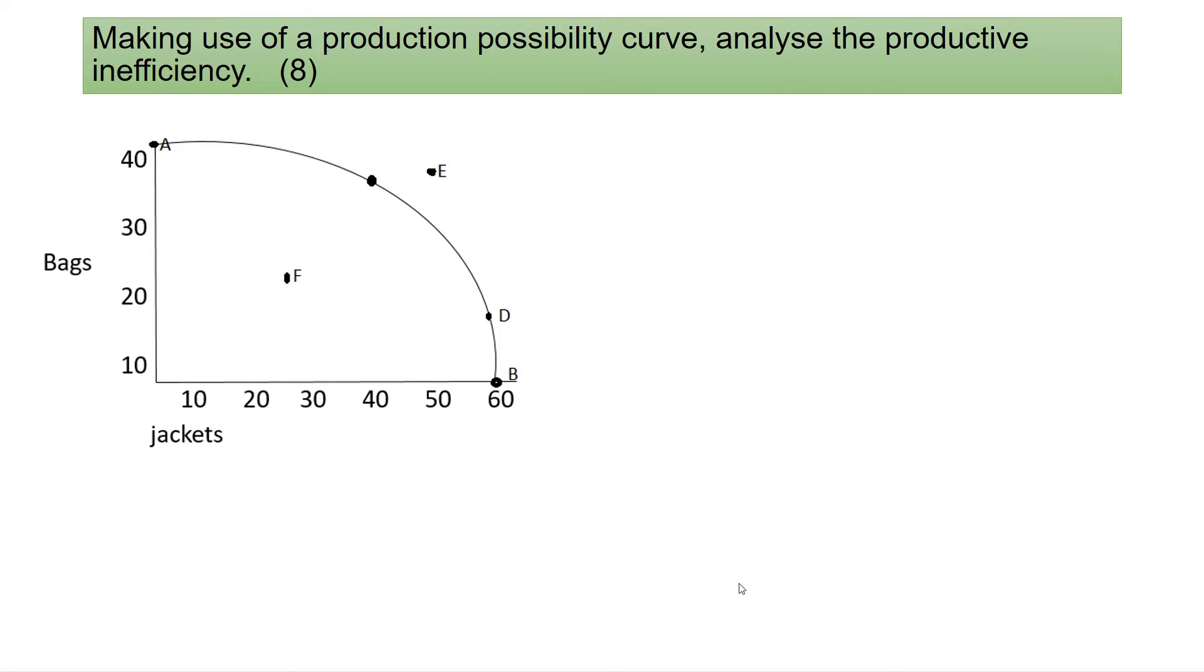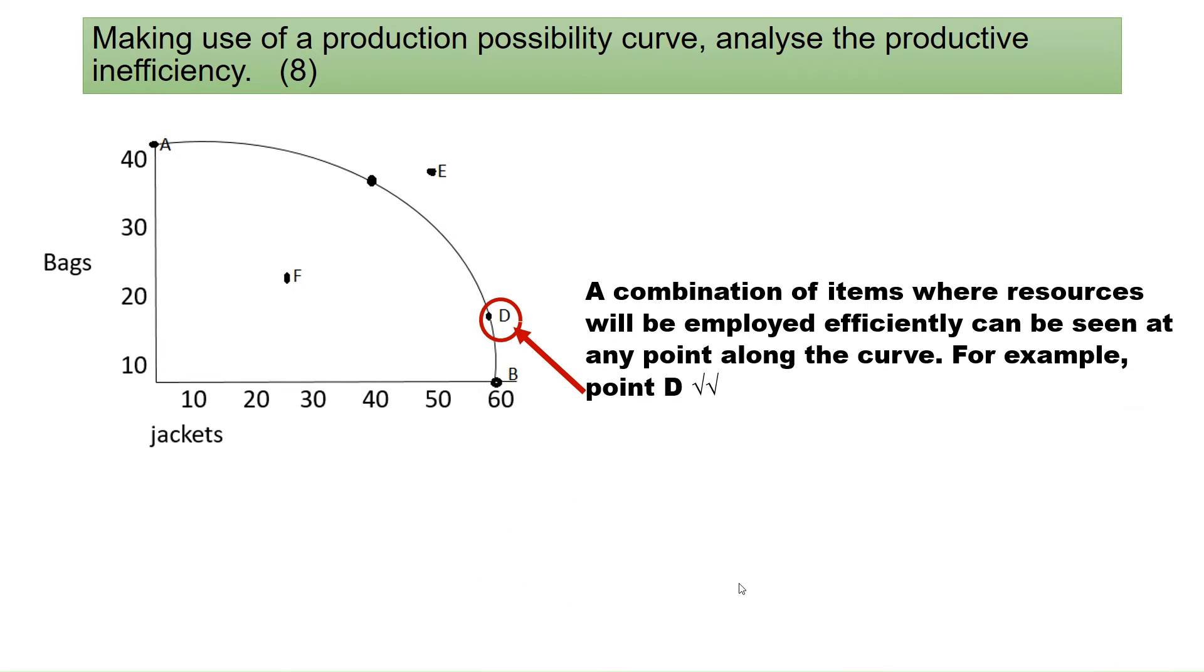A combination of items where resources will be employed efficiently can be seen at any point along the curve. For example, point D.